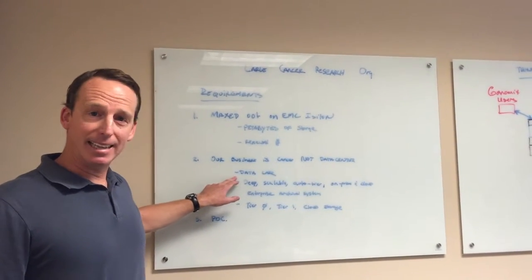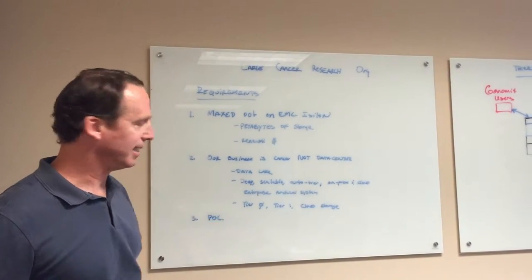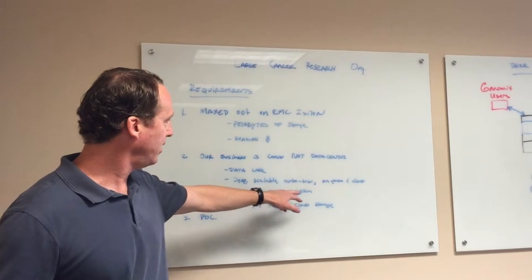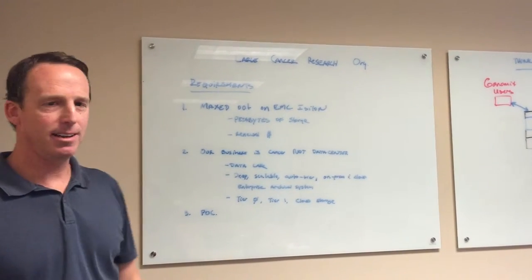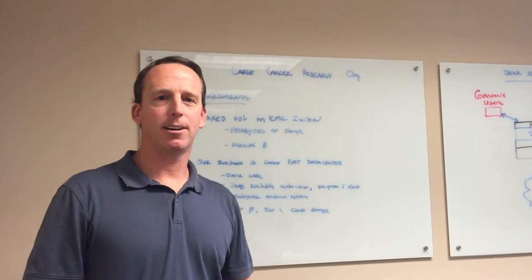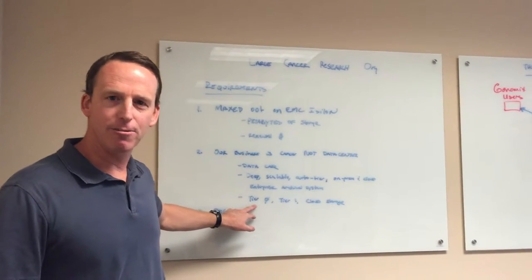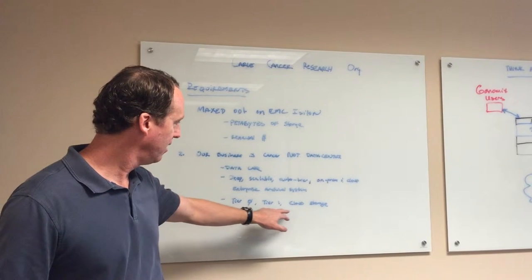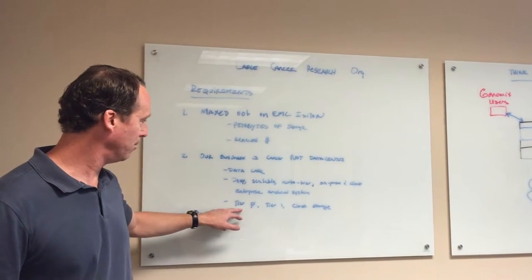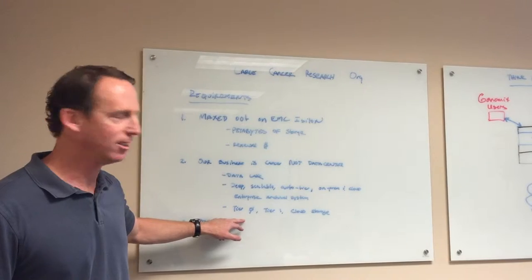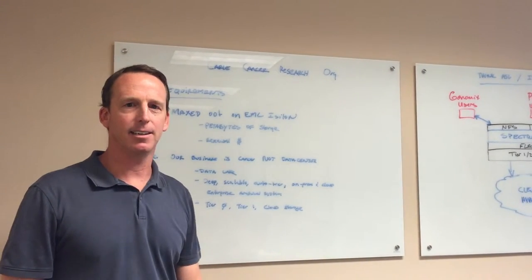They wanted to build a data lake—deep, scalable, auto-tiering, on-premise and in-cloud. What they're calling it is an enterprise archival solution. They want to be able to go from tier zero flash to tier one and cloud storage, moving data off extensive flash storage down the tiers.